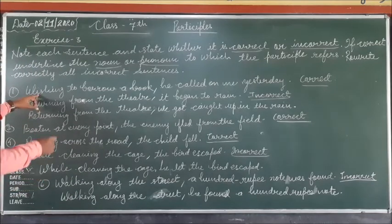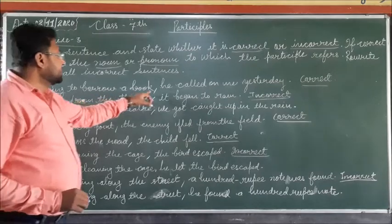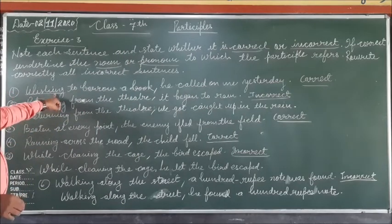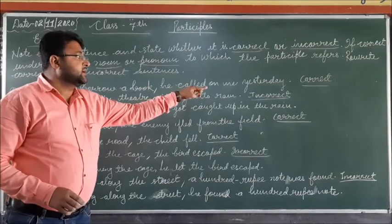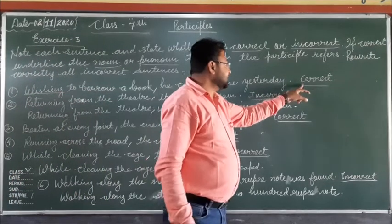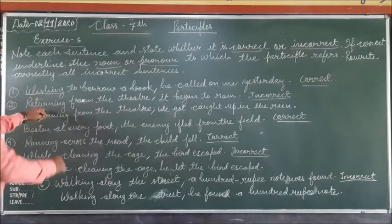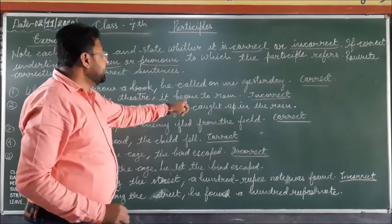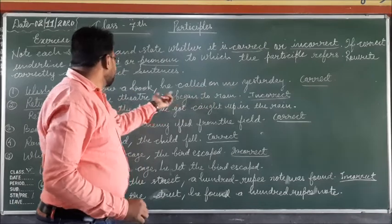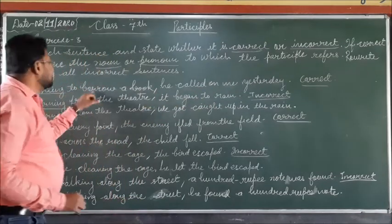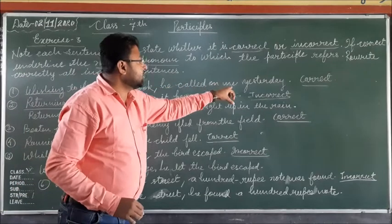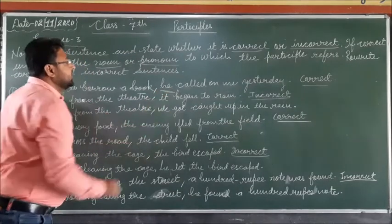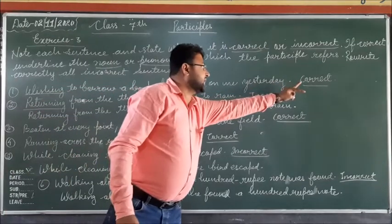First sentence: 'Wanting to borrow a book, he called on me yesterday.' This is a correct sentence. The participle refers to the pronoun 'he,' which is the subject of the sentence, and that is why it is correct.